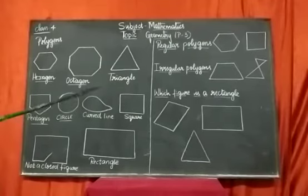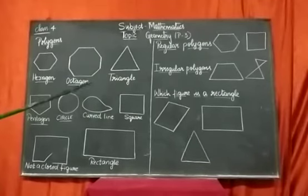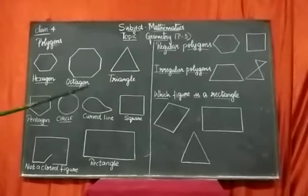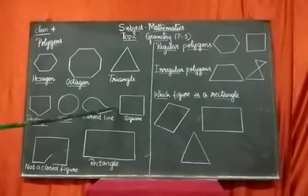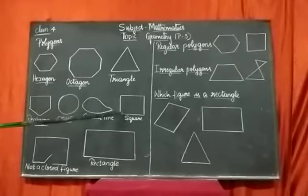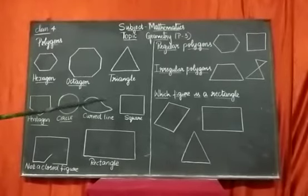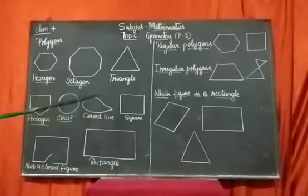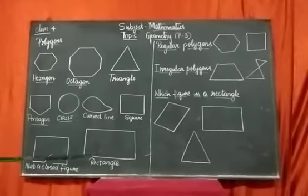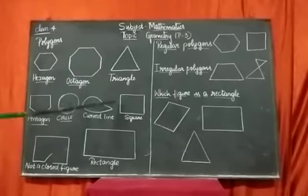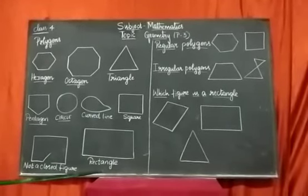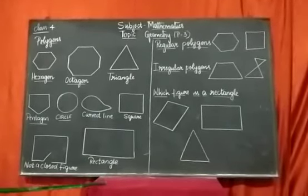Square — what is a square? It is also a quadrilateral. A quadrilateral in which all the sides are equal is nothing but a square. In a square, all the angles are right angles — the angle formed in a square is a right angle.